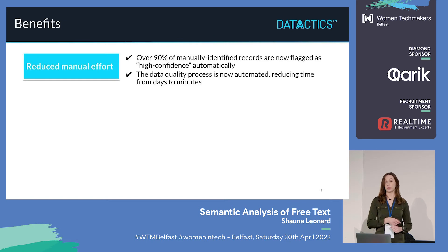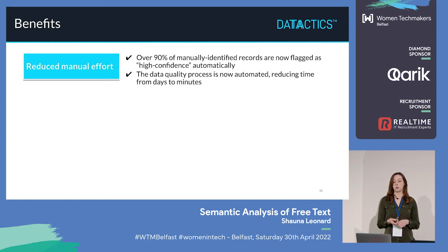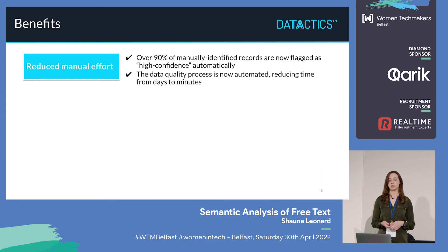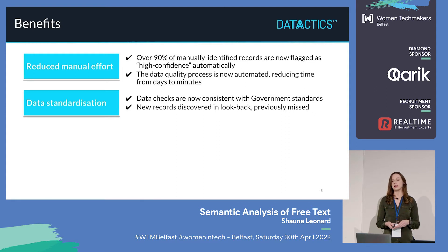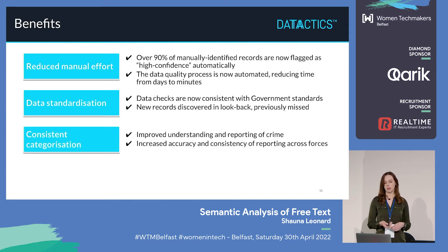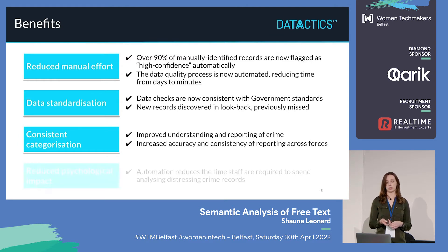The benefits of this are reduced manual effort: over 90% of manually identified records are now flagged as high confidence automatically — the user doesn't need to look at them. The data quality process is now automated, reducing time from days to minutes. A user could have spent two or three days a month looking at this; our process now runs in about eight minutes with fairly high accuracy. Data standardisation means that across the 43 forces, one force may have been saying a record is knife crime while another disagrees — now it's consistent across the whole of England and Wales. We've also identified records that forces may have missed previously, so it's more accurate overall. Consistent categorisation means forces now report crime the same way. And probably a really important one is reduced psychological impact, reducing the time a user needs to manually check these records, some of which may be distressing.